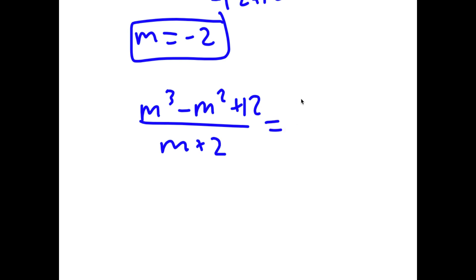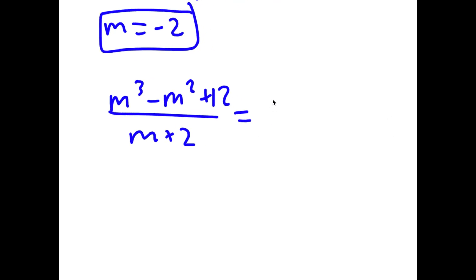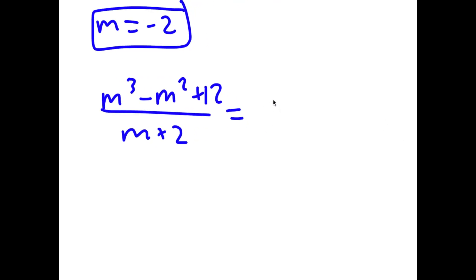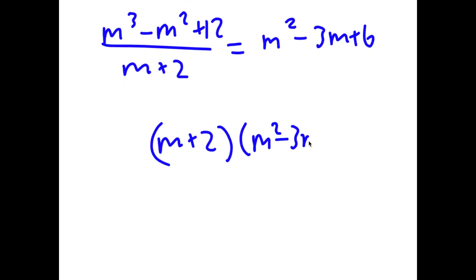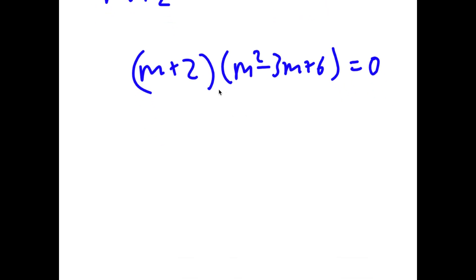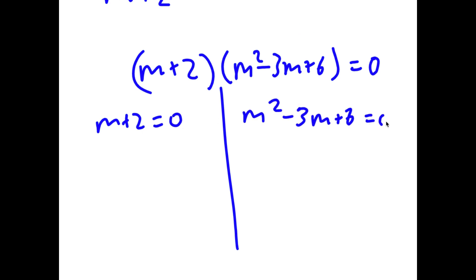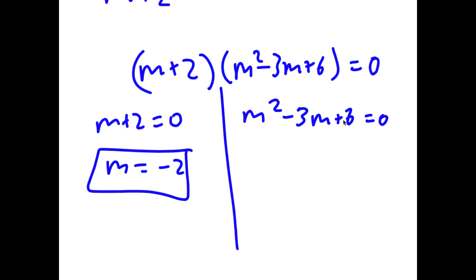Dividing gives m squared minus 3m plus 6. So we have m plus 2 times m squared minus 3m plus 6 is equal to 0. This gives two equations: m plus 2 equals 0, which confirms m equals negative 2, and m squared minus 3m plus 6 equals 0. Applying the quadratic formula to the second equation gives m equals 3 plus or minus the square root of 15 times i, all over 2.